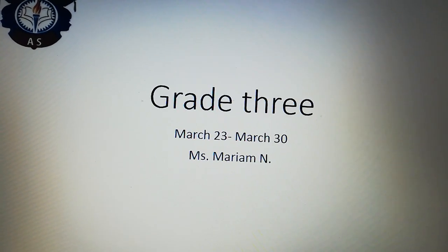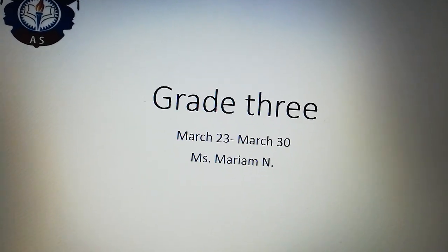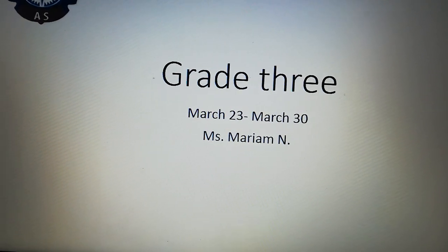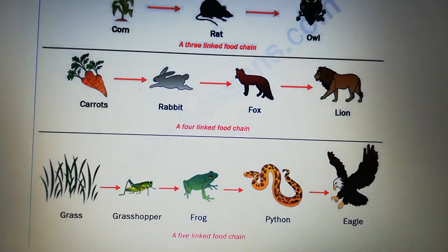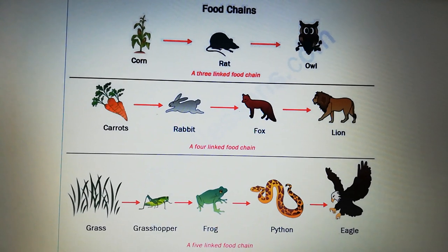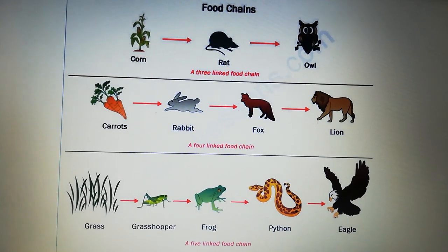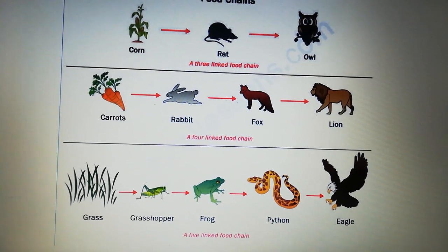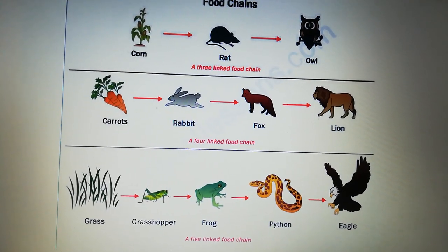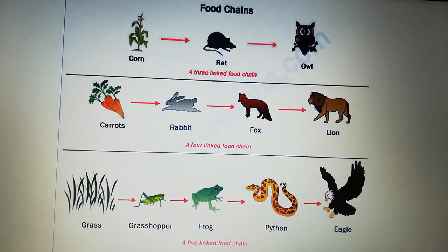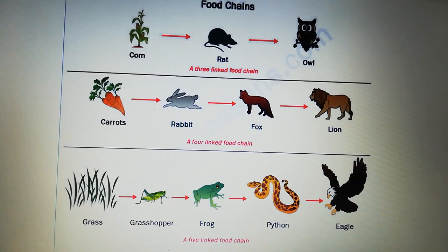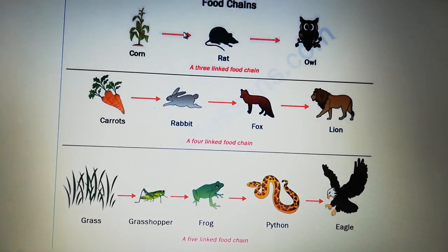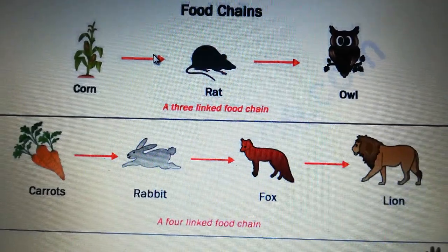Hello, Grade 3. I hope you are doing well, and today we're going to proceed with the lesson of food chain and food group. What is a food chain? A food chain shows us how living organisms rely on each other in order to get their food. It is composed of many links, and the arrow means eating.